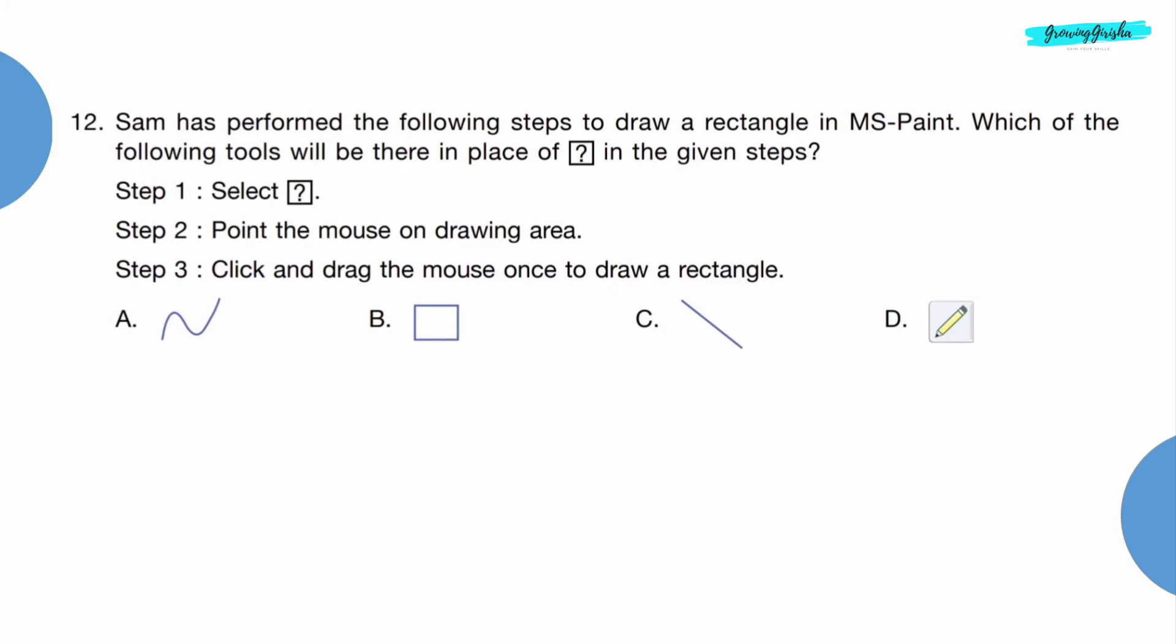Question 12: Sam has performed the following steps to draw a rectangle in MS Paint. Which of the following tools will be there in place of question mark in the given steps? Step 1: Select question mark. Step 2: Point the mouse on drawing area. Step 3: Click and drag the mouse once to draw a rectangle.